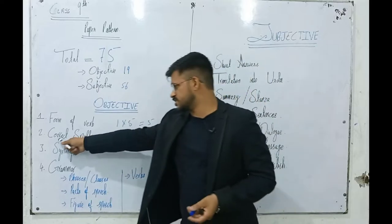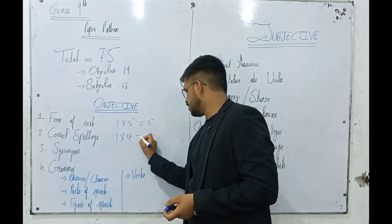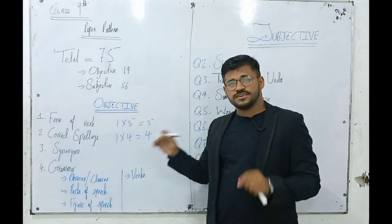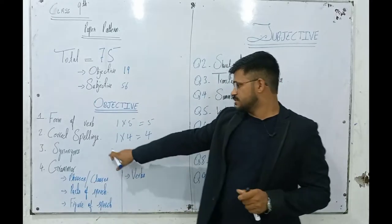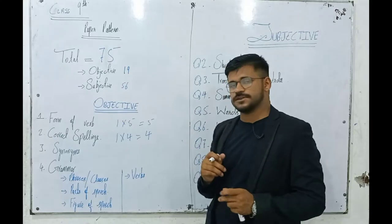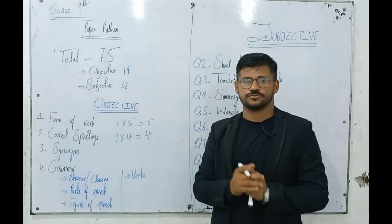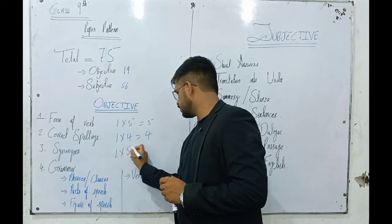Next is correct spelling. We have 1 multiplied by 4, so 4 MCQs on spelling. Third, we have synonyms which are called word meanings. This is also 1 multiplied by 5.